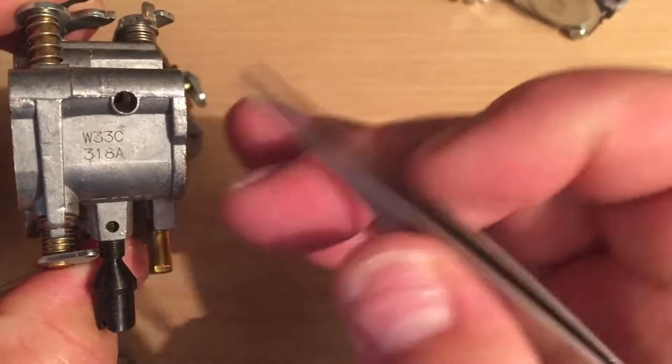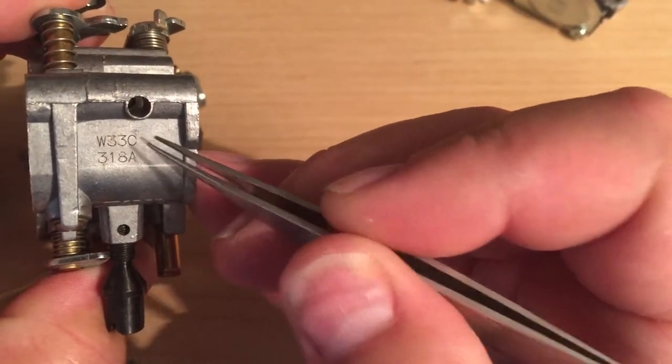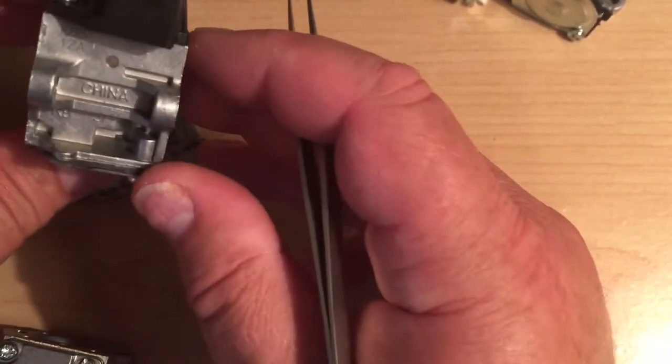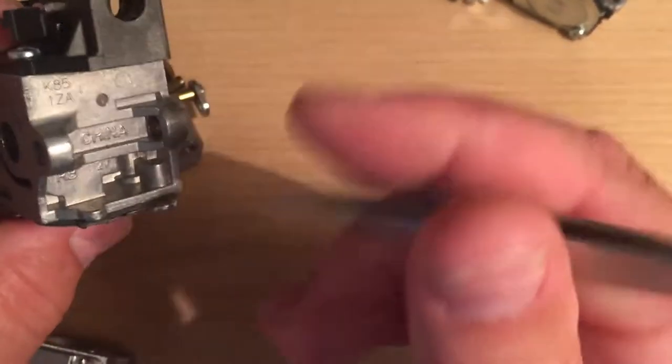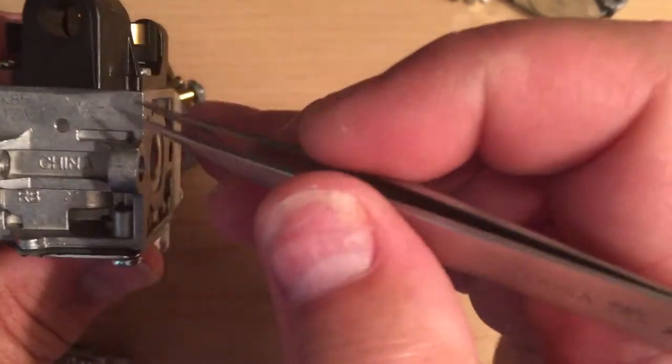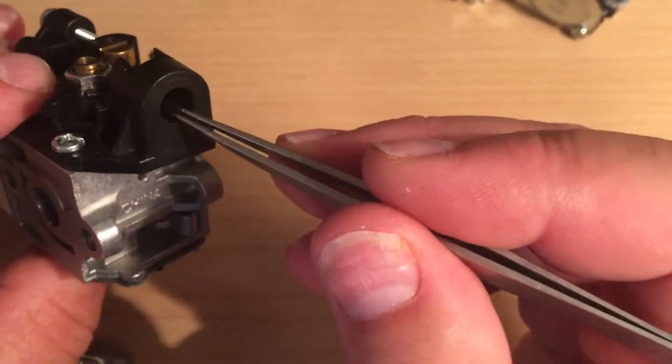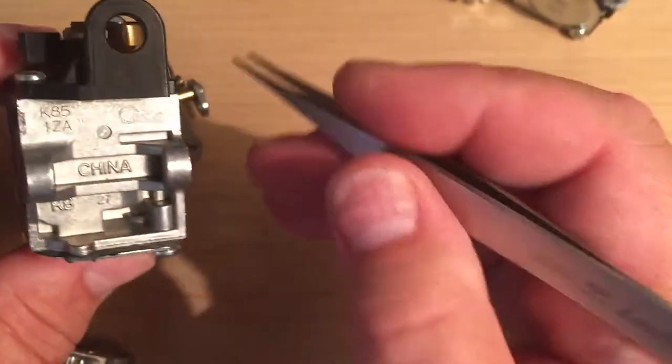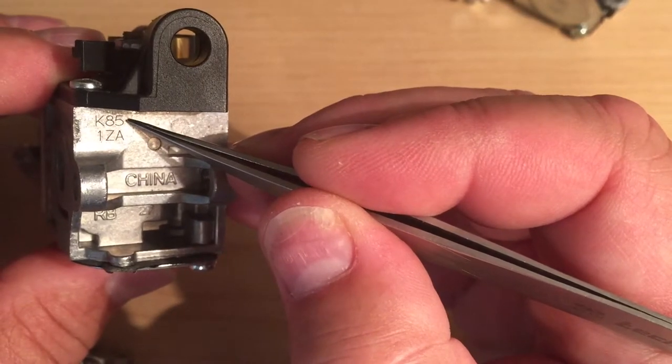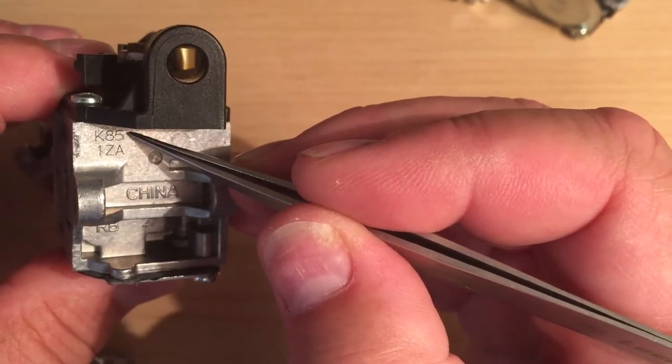So on rotary carburetors, the model number is a little different. It's in the upper left hand corner, right below where the throttle cable goes into the carburetor. You usually should be able to find it in the upper left hand corner.